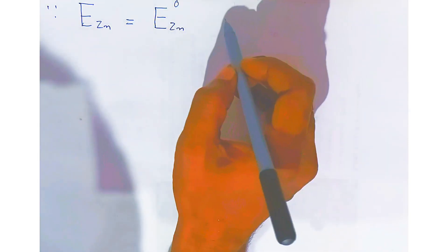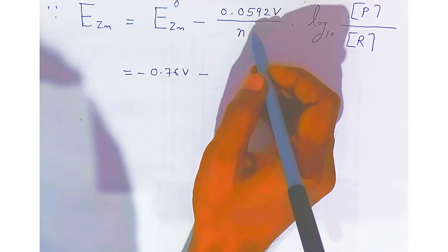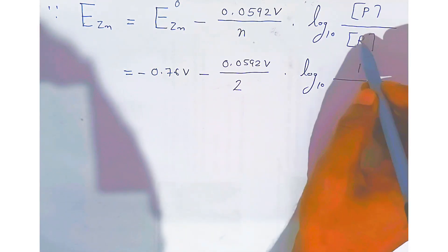So the zinc electrode potential equals the standard zinc potential minus (0.0592 volt / n) times log base 10 of the ratio of product concentration to reactant concentration. Putting in the values: standard zinc potential is minus 0.76 volt, minus 0.0592 volt divided by 2, times log base 10. The ratio — solid is always taken as 1, and the reactant is the concentration of zinc 2+.